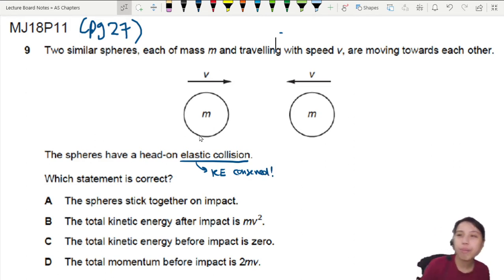Let's check through the statements one by one. First one says that the spheres stick together on impact. Wait a second. When they stick together, that means it is a perfectly inelastic collision. So that ain't gonna happen. So nope, not A.